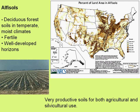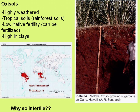Oxisols are found primarily in the tropics — most soils in the Amazon rainforest and central Africa's rainforests sit on Oxisols. These are also very highly weathered tropical soils with very little fertility, because most nutrients are tied up in the canopy. A major problem with deforestation in tropical forests is that nutrients are removed or volatilized by fires after clearing and don't get a chance to return to the soil.